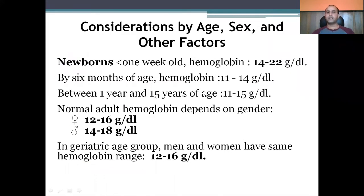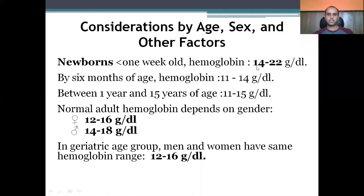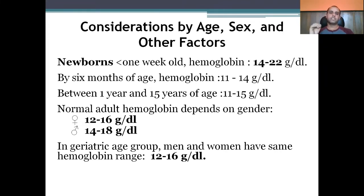Looking at hemoglobin levels by age: newborns less than one week old have hemoglobin between 14–22 g/dL. By six months it decreases to 11–14 g/dL, and between one to fifteen years it is 11–15 g/dL. The normal level depends on gender: 12–16 g/dL in females and 14–18 g/dL in males. However, in the geriatric population or post-menopausal phase, both males and females come to the same range of 12–16 g/dL.